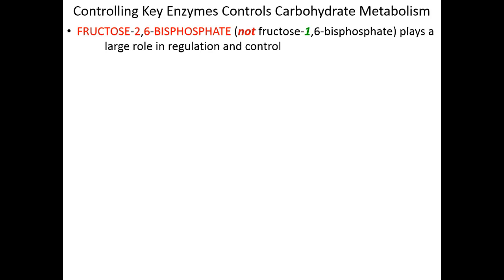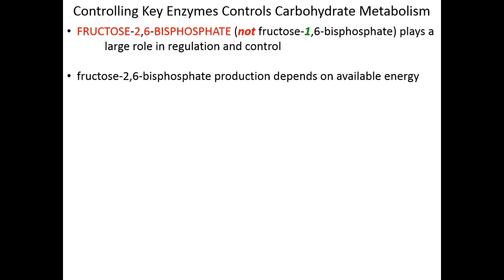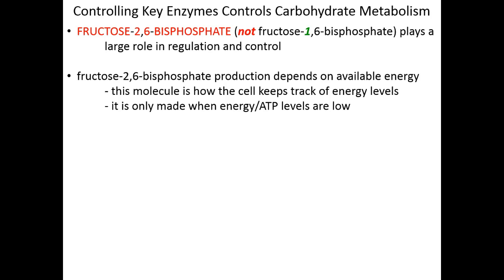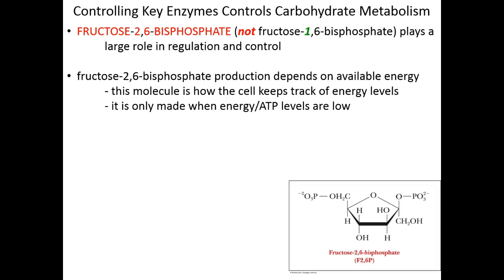We introduce a new molecule here: fructose 2,6-bisphosphate — not fructose 1,6-bisphosphate, the intermediate of glycolysis, but fructose 2,6-bisphosphate. This molecule plays a huge role in the regulation of overall glucose metabolism. A cell's ability to make it depends on available energy stores. Counterintuitively, fructose 2,6-bisphosphate is made only when energy and ATP levels begin to get low. This is the cell's 'oh-no' molecule — the molecule the cell makes when it starts to worry about energy starvation.